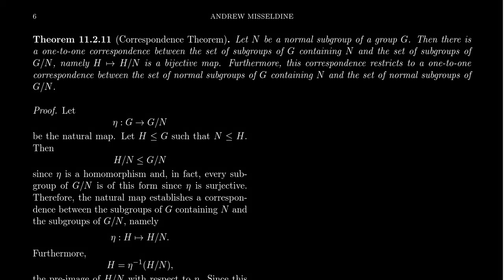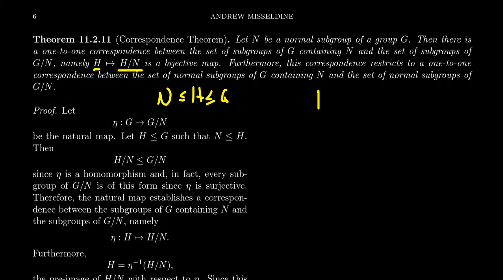So the statement is a bit of a mouthful. Let N be a normal subgroup of G. Then there exists a one-to-one correspondence — which is where it gets its name — between the set of subgroups of G containing N (the lattice of subgroups of G containing N) and the set of subgroups of G mod N. The bijection is: take H, a subgroup of G containing N, and map it to H mod N, which is a subgroup of G mod N containing N mod N, the trivial subgroup.